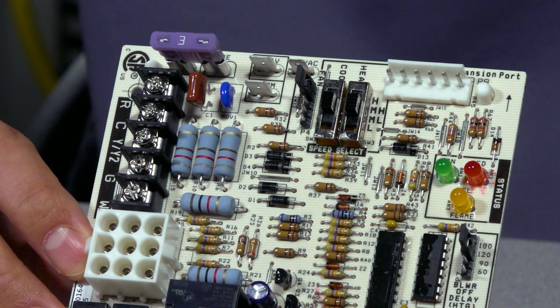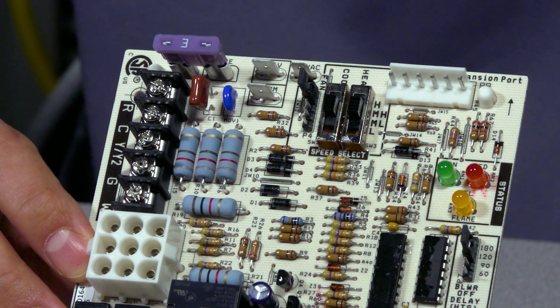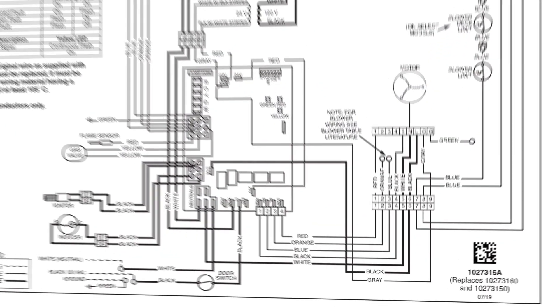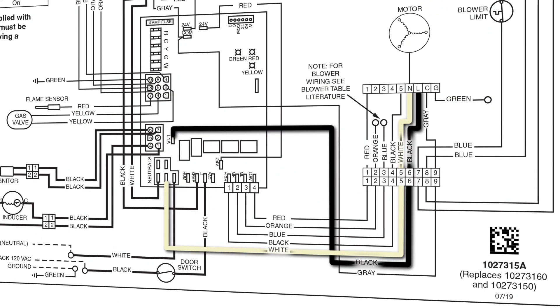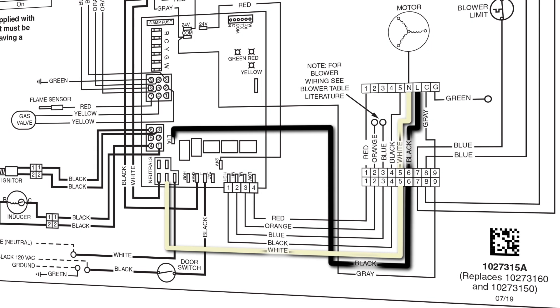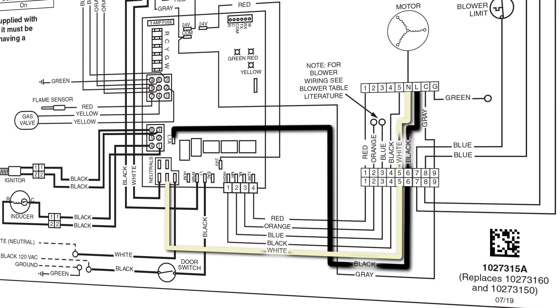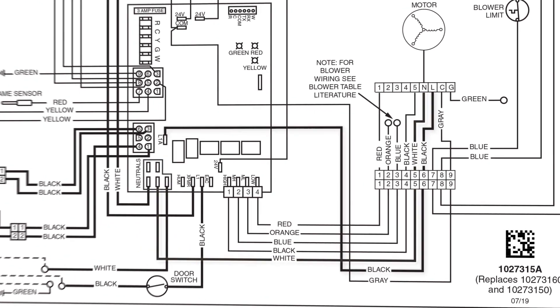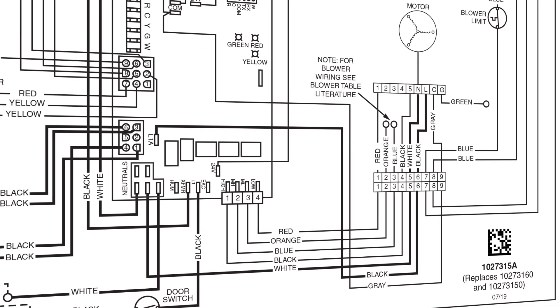And we'll take a look at that on the wiring diagram. What you'll have is a black and a white wire which will be your 120 volt going to the motor, and that comes directly from the furnace board. You will then have your speed wires.